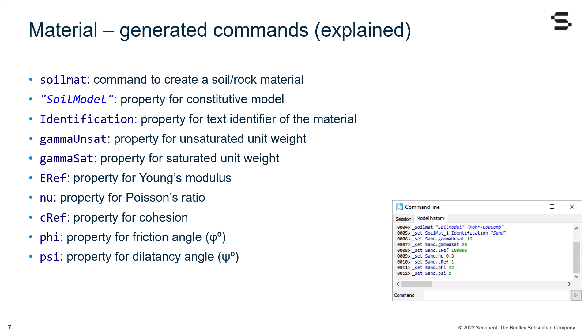The gammaUnsat and gammaSat are the properties for unsaturated and saturated unit weights, respectively. The ERef is the property for the Young's modulus. The nu is the property for the Poisson's ratio. And finally, the strength parameters: cRef for cohesion, phi for friction angle, and psi for the dilatancy angle.